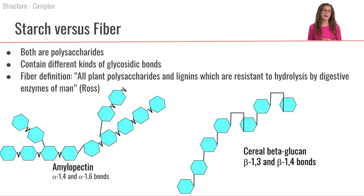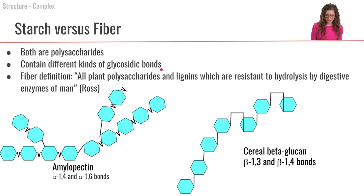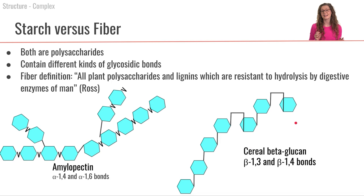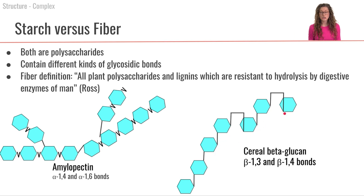Now, comparing starch and fiber: both are polysaccharides with many monosaccharides bound together, but they have different glycosidic bonds. Starch (e.g., amylopectin) has alpha-1,4 and alpha-1,6 bonds, which humans can hydrolyze. Fiber has different bonds that humans cannot hydrolyze. For example, beta-glucan found in cereal grains like oats has beta-1,3 and beta-1,4 bonds, which humans lack enzymes to break.